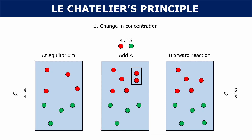If you look at your equilibrium constant, your Kc is five over five after the stress, and your Kc is four over four prior when it was at equilibrium. A change in concentration does not actually change your equilibrium constant — it's still one in both cases. So if you add more reactants, the forward reaction increases to use up those reactants and produce products. On the other hand, if you add more products, the reverse reaction increases to get rid of those products and form more reactants. Your equilibrium constant does not change.